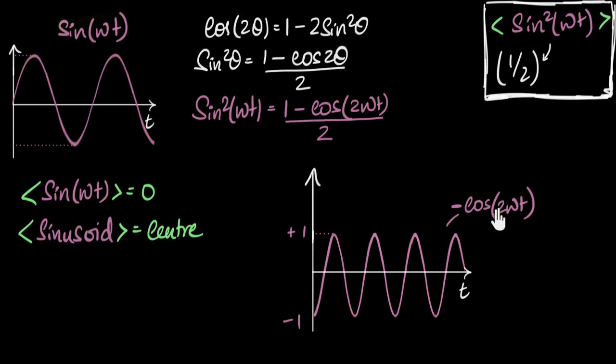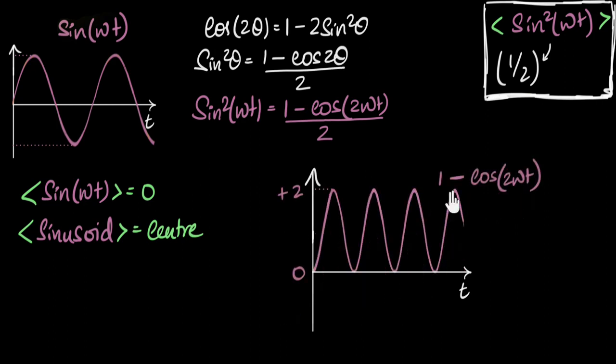Now let's add one to this. When I add, at every point, the value of every point increases by one. So this point, which is at minus one, when you add one, comes to zero. This point comes to one. This point comes to two. So the whole graph shifts up, and this will come to zero, and this will come to two. This is 1 minus cos 2ωt. This is still a sinusoid.